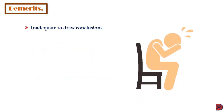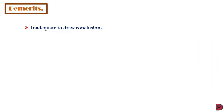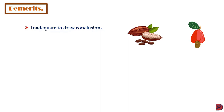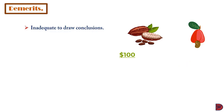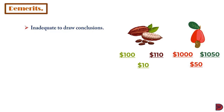Regarding demerits, index numbers give an inadequate conclusion because they are relative, not absolute. For example, if cocoa has a 10% increase and cashew has a 5% increase, you cannot automatically say cocoa performed better. If cocoa sells at $100 and moves to $110, that is a $10 jump. But if cashew sells at $1,000 and moves to $1,050, the 5% represents a $50 jump — which is actually larger. So the index alone does not reveal what really occurred.